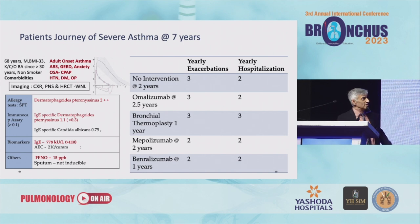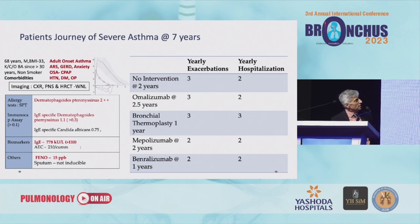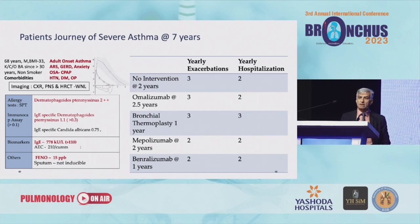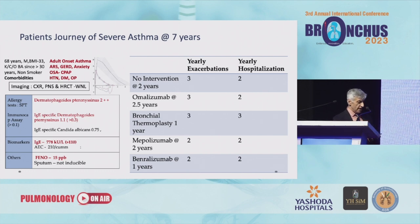T2 high. You can see the number of exacerbations requiring oral corticosteroids and hospitalizations. Prior to intervention: two and a half years of omalizumab, bronchial thermoplasty, mepolizumab two years, and benralizumab for one year. What's the difference? Hardly any. So what kind of severe asthma is there in India? What options do we have? Clearly unmet needs.